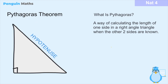So how do right angle triangles and the hypotenuse relate to Pythagoras's theorem? Pythagoras is a way of calculating the length of one side in a right angle triangle when the other two sides are known. The equation here is Pythagoras's theorem and it relates each of the sides to one another. In the diagram, the hypotenuse is labelled a, and the two other sides are b and c, where a is always bigger than b and c.